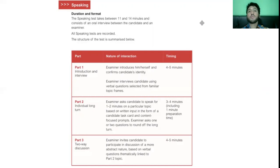Part three is two-way discussion. It's actually an open-ended discussion. You're asked to engage in a discussion with the examiner. The examiner invites the candidate to participate in discussions of a more abstract nature based on verbal questions thematically linked to the part two topic. You will engage in a rhetoric discussion with the examiner.